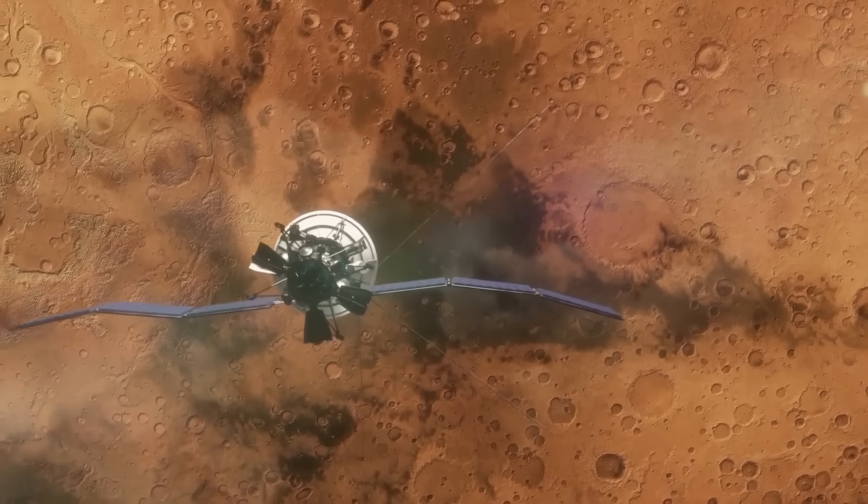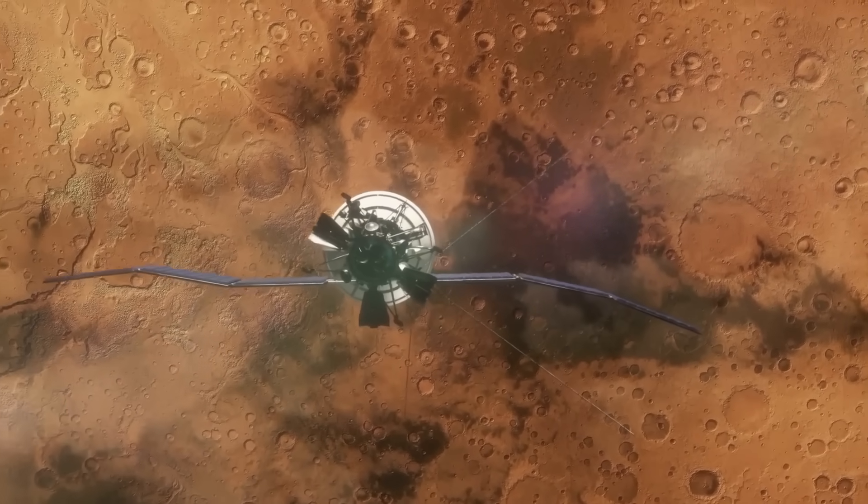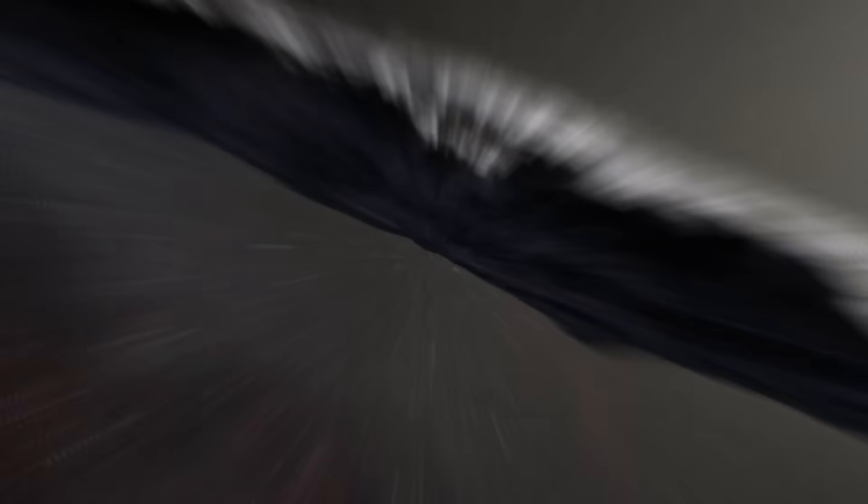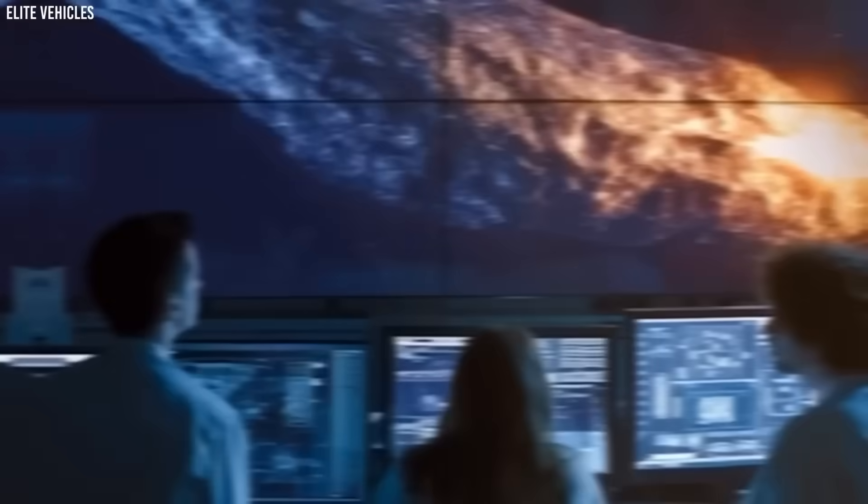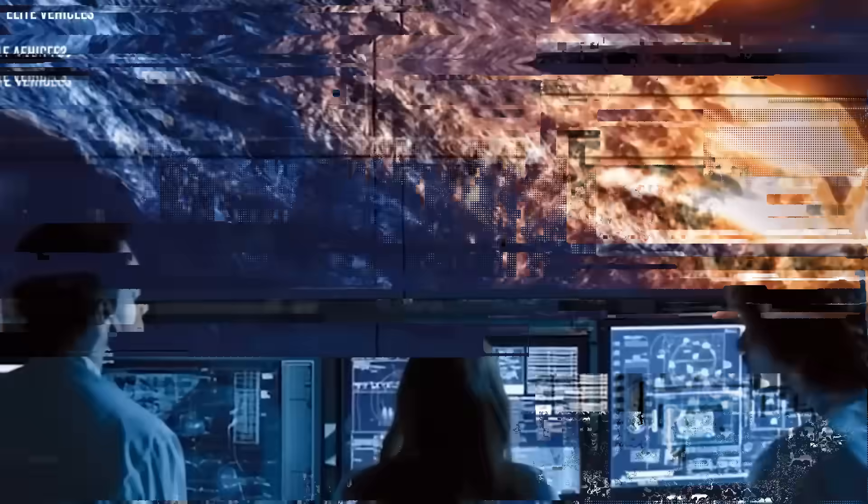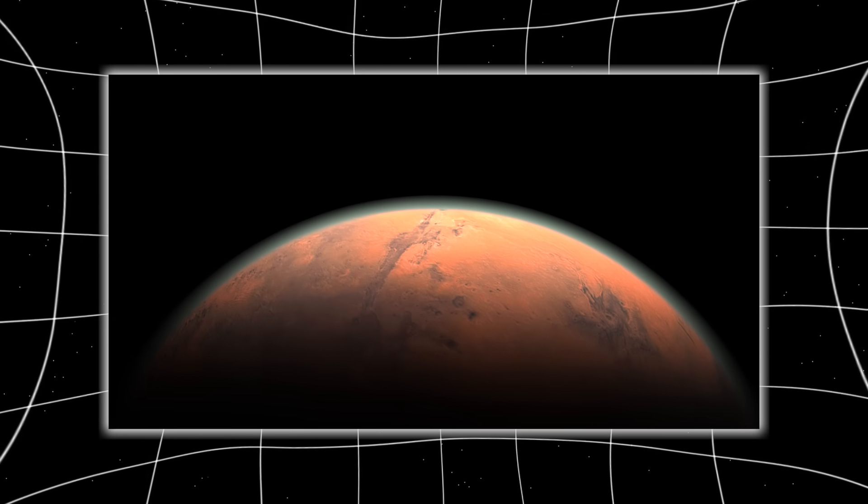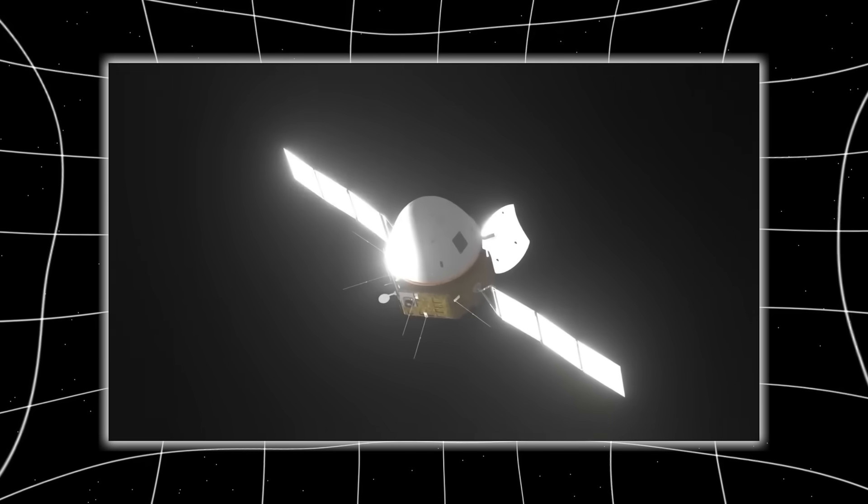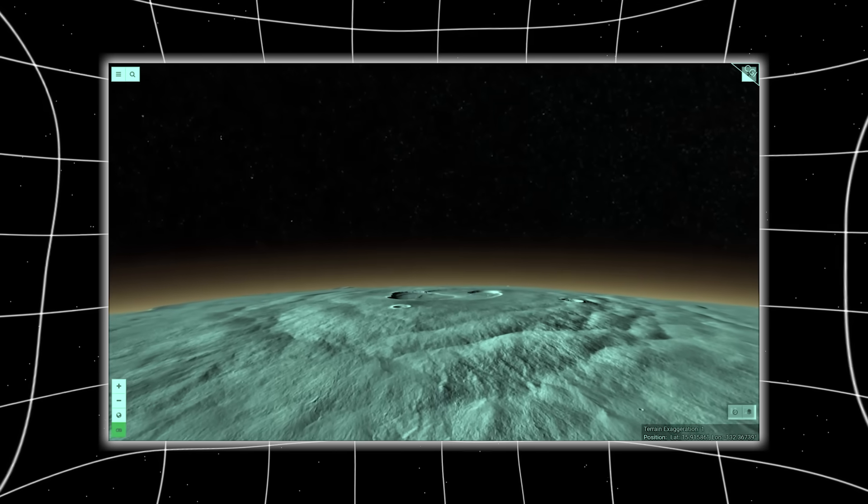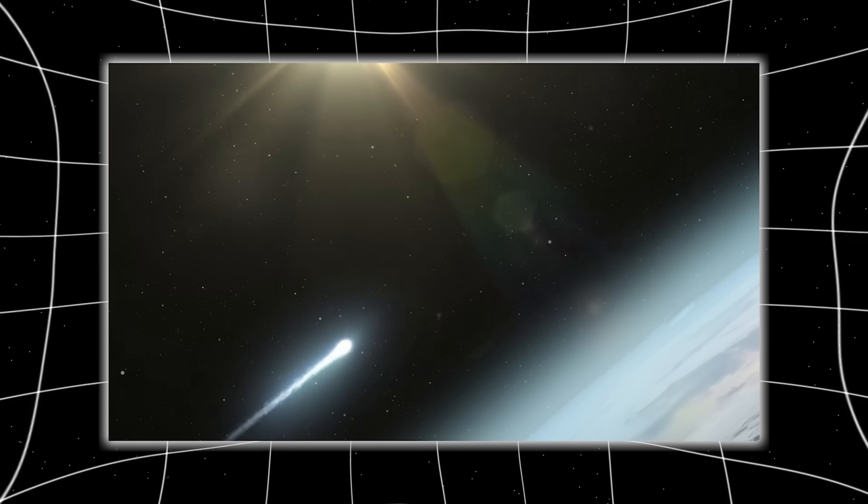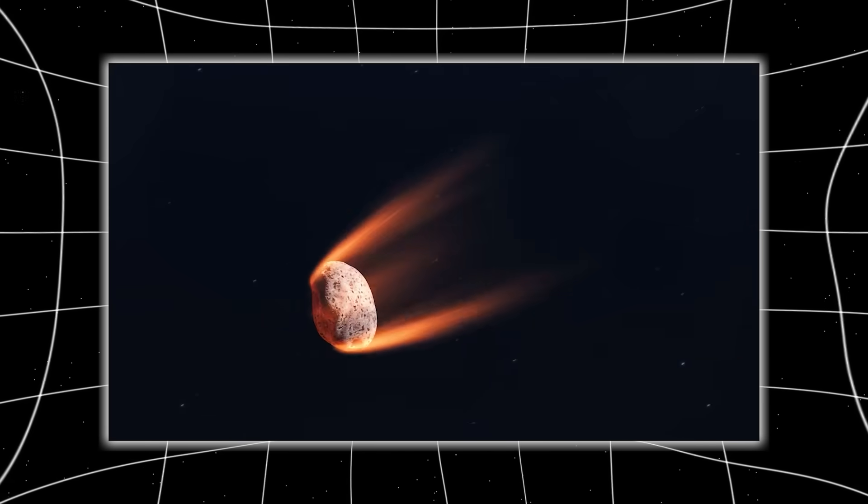But now, with the Tianwen-1 dataset confirming the green tone, the stability, the plume behavior, and the long-range jets, the debate collapsed instantly. China's observation point was completely different. Another planet, another vantage, another spacecraft, another atmosphere, another sensor configuration. And yet the images matched the anomalies almost perfectly.